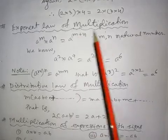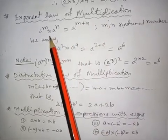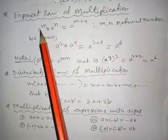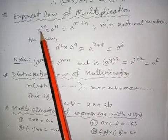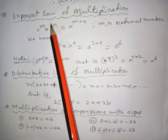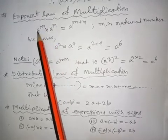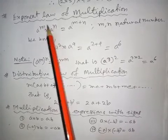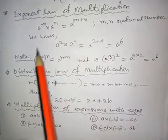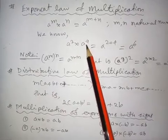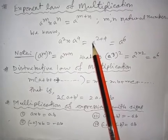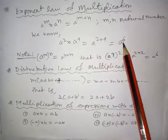The next law is the Exponent Law of Multiplication. We already know this from Class 6. A to the power M multiplied by A to the power N equals A to the power M plus N, where M and N are natural numbers. Here A is the base for both parts, M is the exponent of the first, and N is the exponent of the second. Since both bases are the same, we can perform the multiplication and the exponents will be added. For example, A squared multiplied by A to the 4th: the base stays A and the power is 2 plus 4, so the result is A to the power 6.